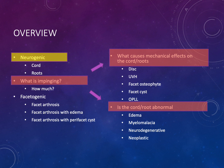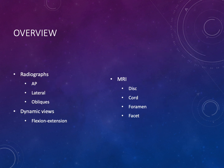The next cause of pain we think of is facetogenic pain. Here the primary concern is whether somebody has facet arthrosis, facet arthrosis with edema, or a perifacet cyst. The rest of this talk is broken up into looking at radiographs, dynamic views on x-ray and CT, and MRI.